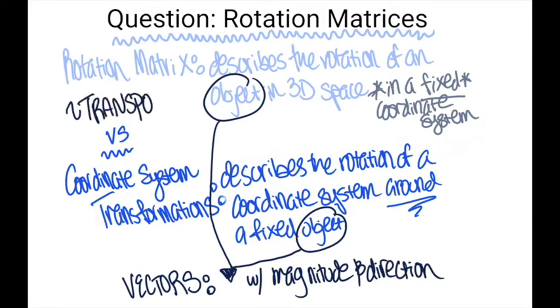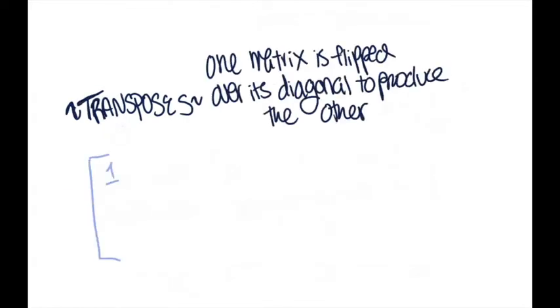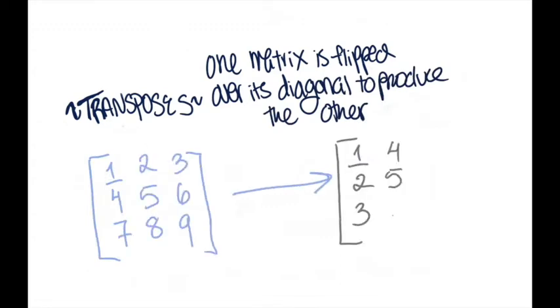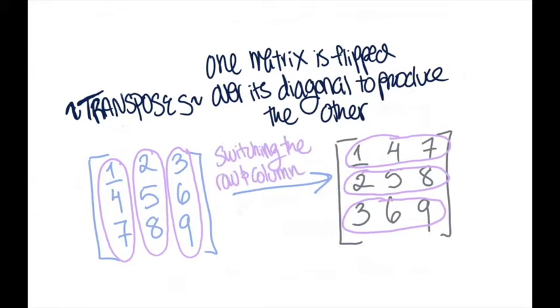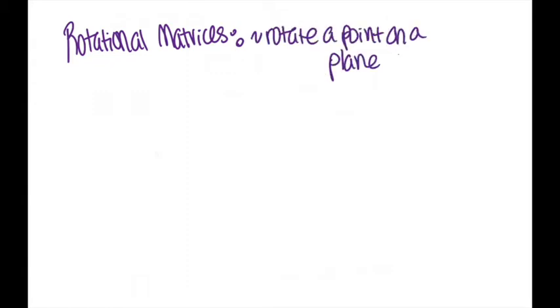Both types of matrices are transposes of the other, meaning that one matrix is flipped over its diagonal to produce the other, switching the row and column indices of the matrix. But let's go back to solving rotational matrices. Let's say we want to rotate a point on our plane, or coordinate system, using rotational matrices.